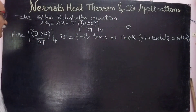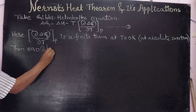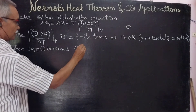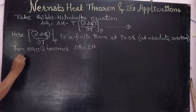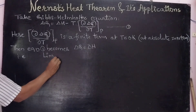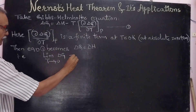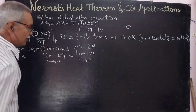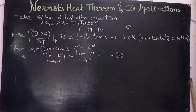This is a finite term at T equal to zero Kelvin, that is absolute zero temperature. So at zero temperature, equation one becomes: ΔG = ΔH. That is, the limit of ΔG as T tends to zero is equal to the limit of ΔH as T tends to zero. This is another form of the Nernst Heat Theorem.